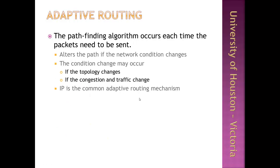In adaptive routing, also referred to as dynamic routing, the pathfinding algorithm alters the path a packet takes through the network in response to changing conditions such as node failure, congestion, or nodes becoming obsolete or being added. A very good example of a dynamic routing protocol is the Internet Protocol, or IP.